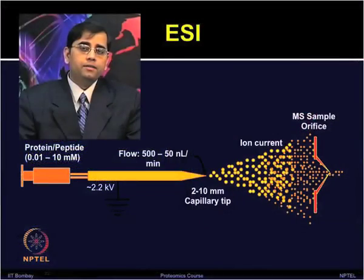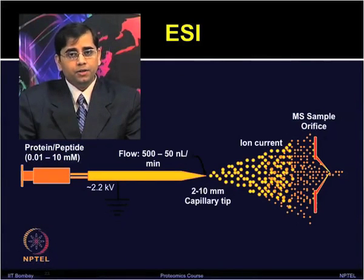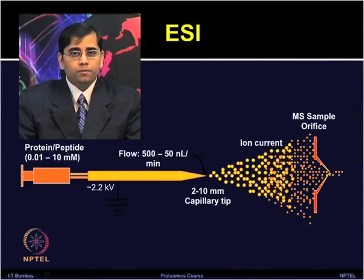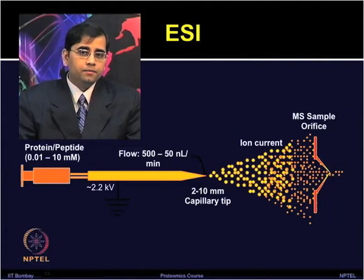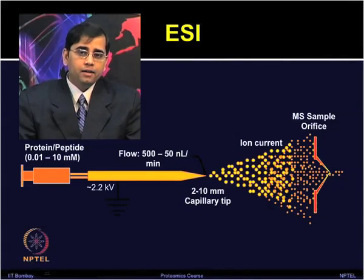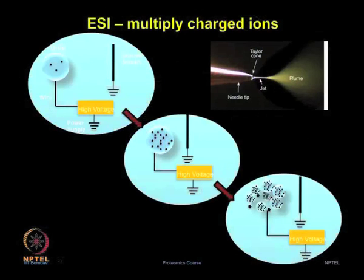In ESI, small droplets of solution are generated by the Taylor cone, which contains the peptide analyte. Protons from the acidic solution give the droplets a positive charge, so they move from the needle towards the negatively charged instrument. The top panel shows the Taylor cone generation, and the center shows production of multiply charged ions. ESI is usually coupled to the MS via real-time liquid separation.